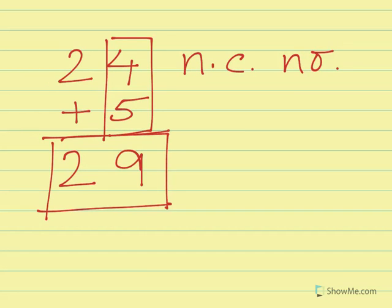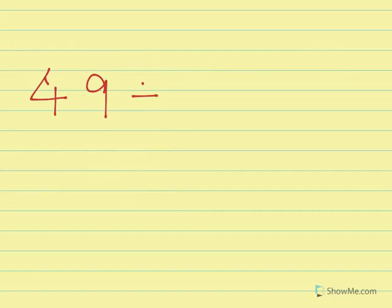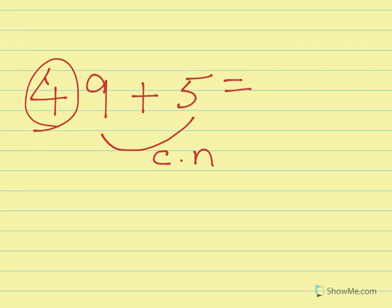If we practice this method, we can do this addition within seconds. For example, 49 plus 5: 9 plus 5 is a carrying number, so 4 will increase by 1 to become 5. The n number of 9 plus 5 is 4, as 9 plus 5 is 14. So the answer is 54.